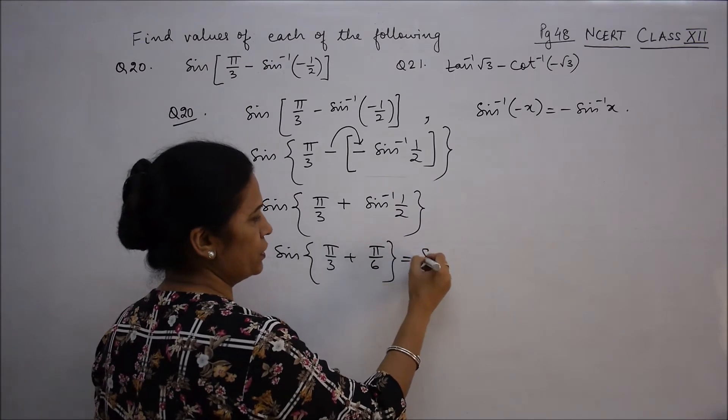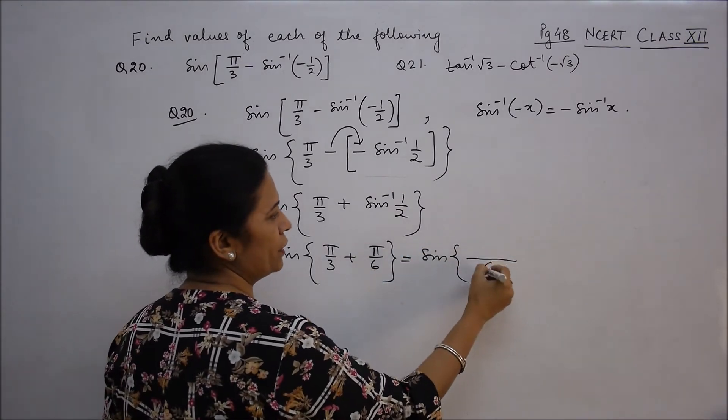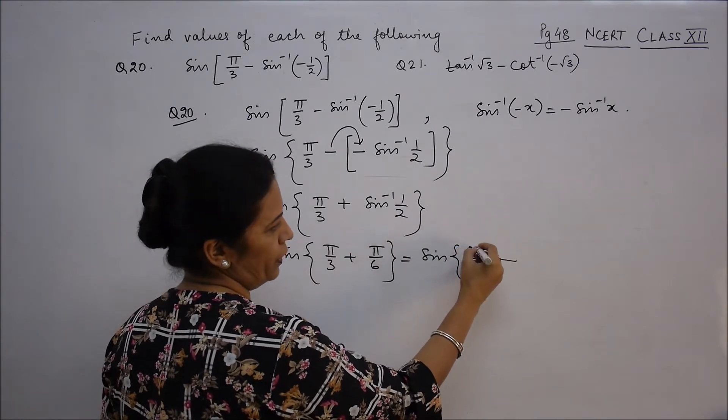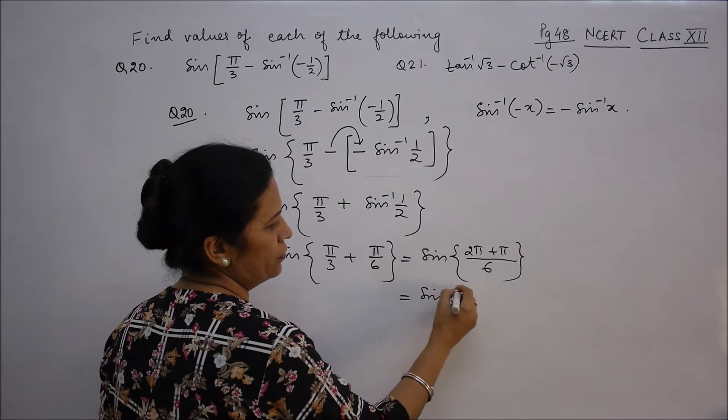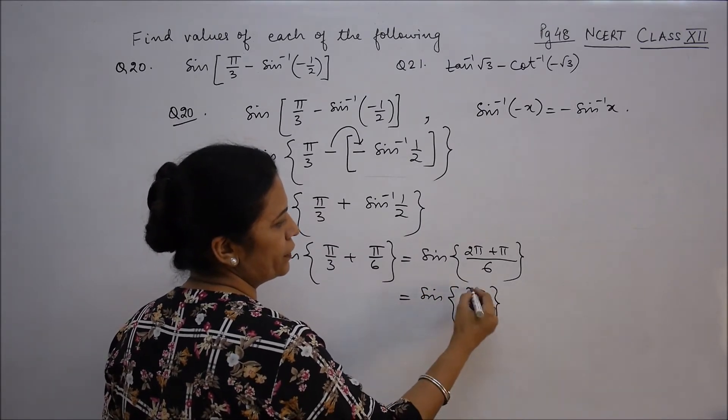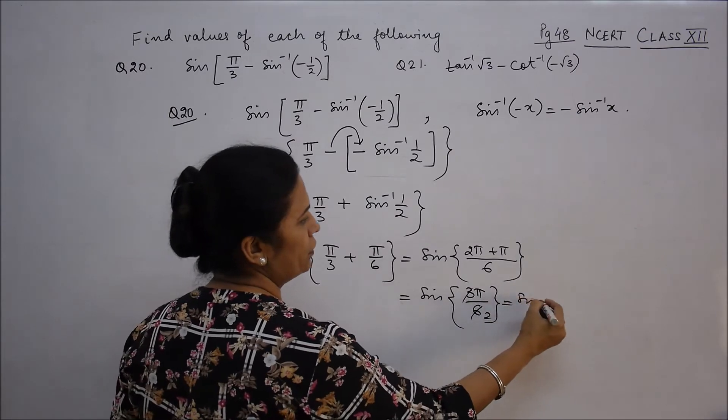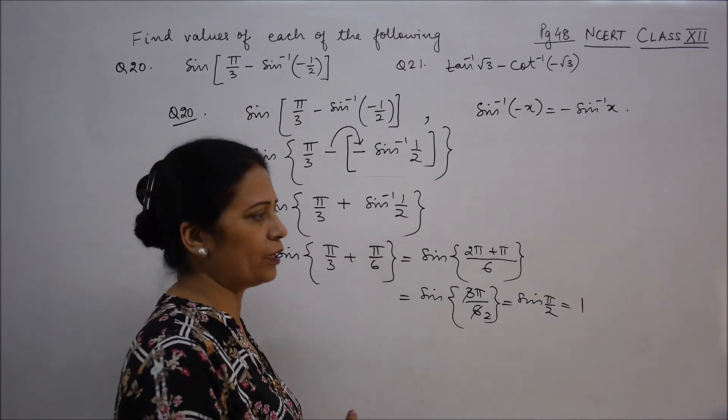This is sin of 5π/3 plus 5π/6. Taking LCM of 6, this is (2π + 5π)/6, which gives sin 3π/6. Cancel to get sin π/2, which equals 1. So this is the value.